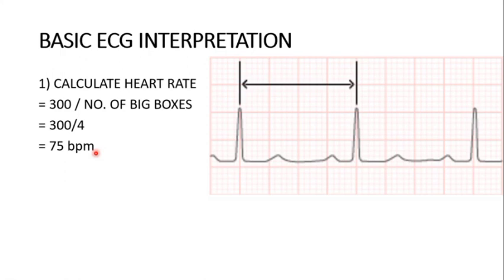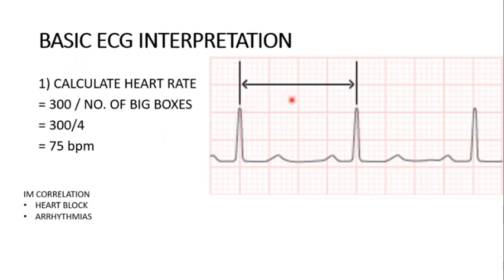A heart rate of 75 is normal. If the heart rate is less than 60, it can indicate heart block; if more than 100, it can indicate arrhythmias. The normal number of big boxes between two R waves is roughly three to five. If less than three big boxes, it can be heart block; if more than five big boxes, it can be arrhythmias. In this patient, we have four boxes — which is normal.